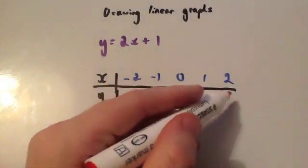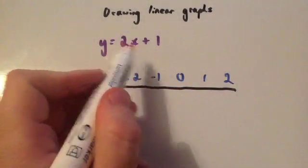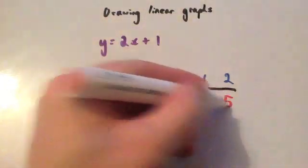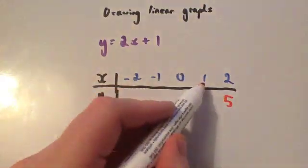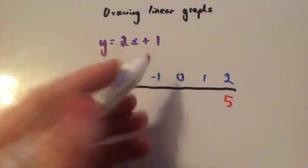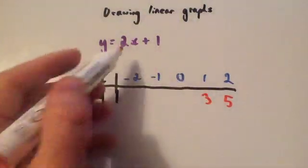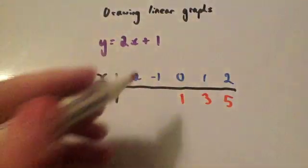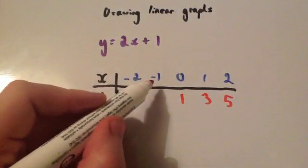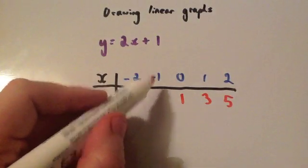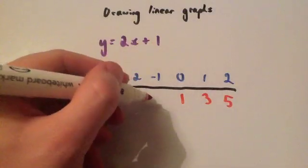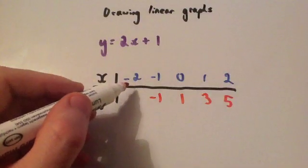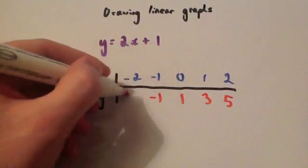I always start with the positive values. 2 times 2 is 4, plus 1 is 5. 2 times 1 is 2, plus 1 is 3. 2 times 0 is 0, plus 1 is 1. 2 times minus 1 is minus 2, plus 1 is minus 1. 2 times minus 2 is minus 4, plus 1 is minus 3.